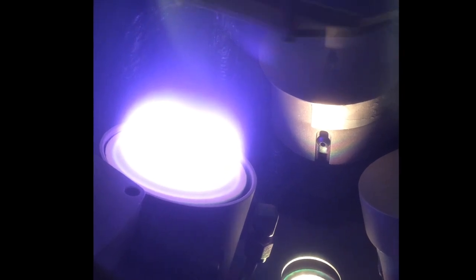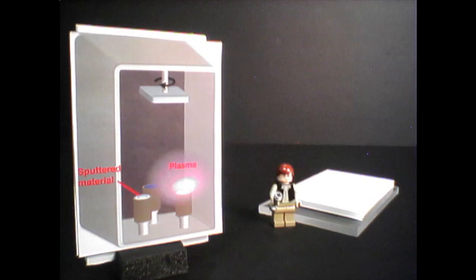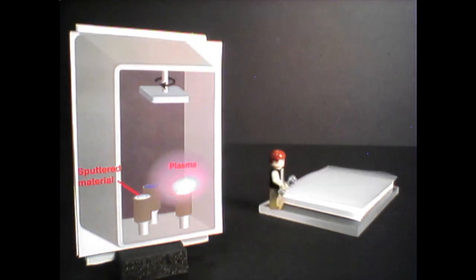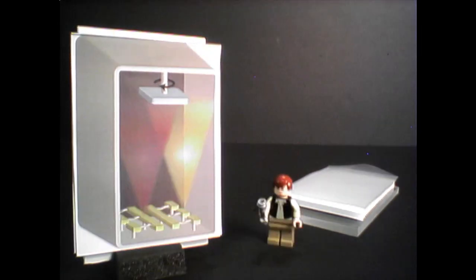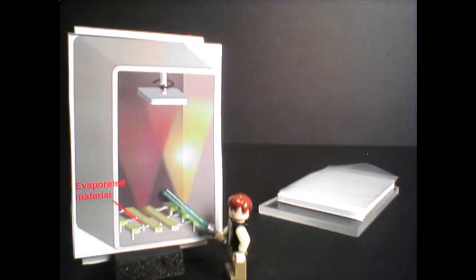Now that we have our transparent electrode, we'll deposit several more layers, starting with a thin buffer layer, which appears here next to Han. One of the most common ways of making these films is thermal evaporation.